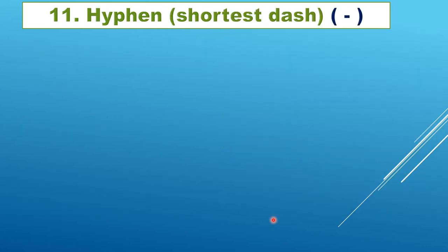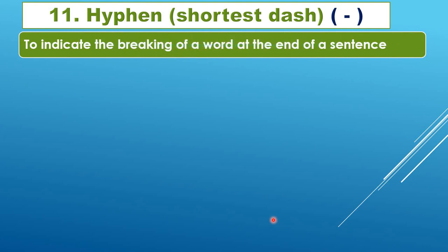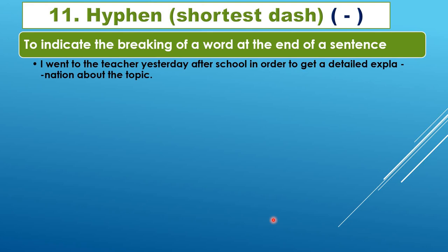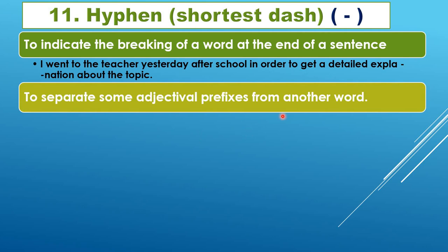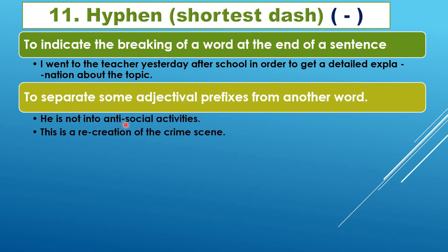Now we look at dashes. The hyphen is the shortest dash. It is used to indicate the breaking of a word at the end of a line, showing the word continues. It is also used to separate adjectival prefixes from another word — for example, 'anti-social activities.' Without the hyphen, 'anti' and 'social' would not be read together as a prefix.